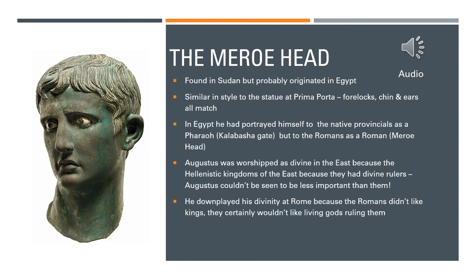There's lots of information out there about the Meroe Head, so I'm not going to spend a lot of time describing it over the next two slides. There's a podcast to listen to, and then there's a whole lecture by Mary Beard also to watch. The Meroe Head, in its simplest form, was found in Sudan, probably originated in Egypt, and was apparently found quite close to the Kalabsha Gate, only a few miles down the road. It's similar in style to the statue at Prima Porta — the forelocks, the chin, and the ears all match the Prima Porta statue.